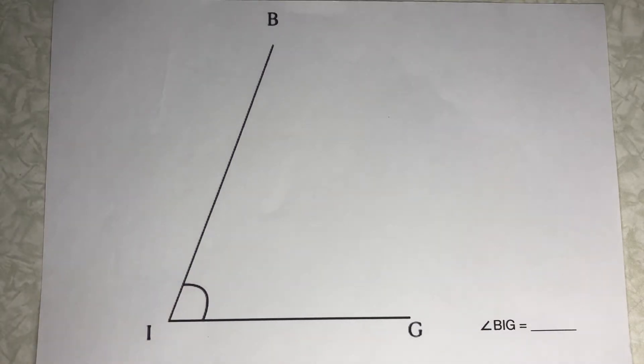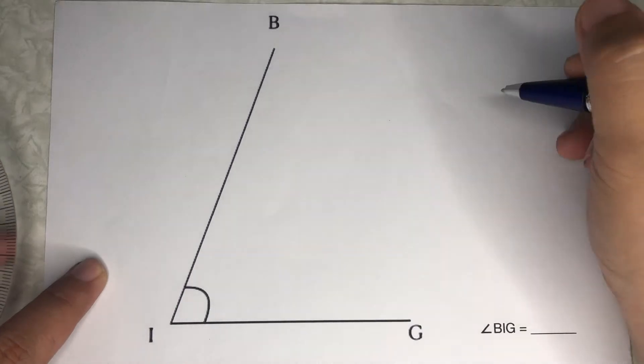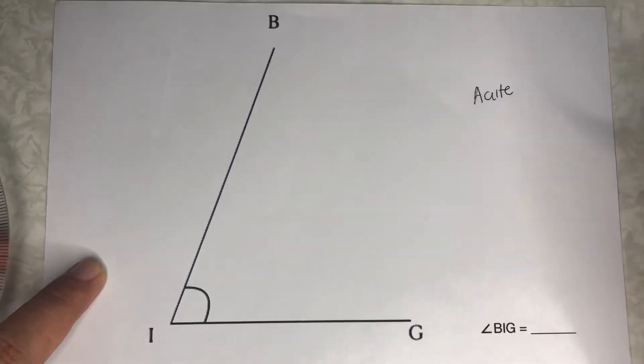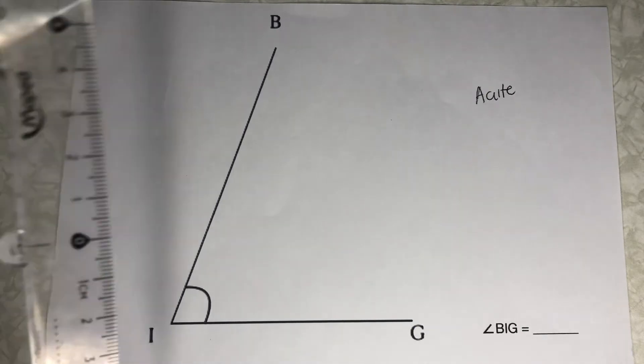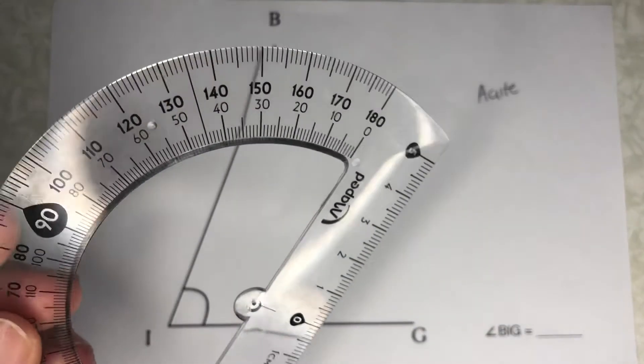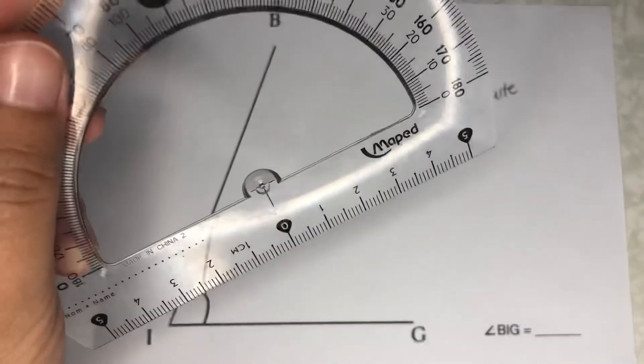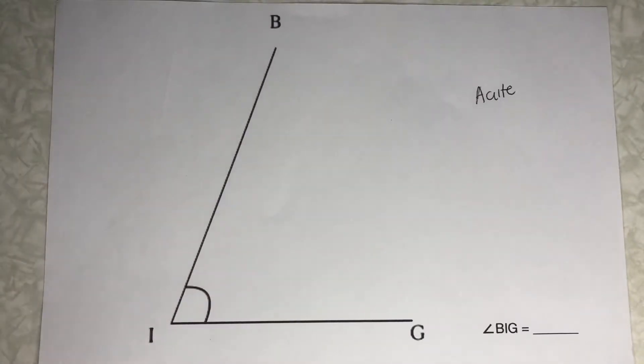So this is an acute angle. Since this is an acute angle, we now have a good estimate that our measurement should be less than 90 degrees. Now let's try to use our protractor in measuring this angle.